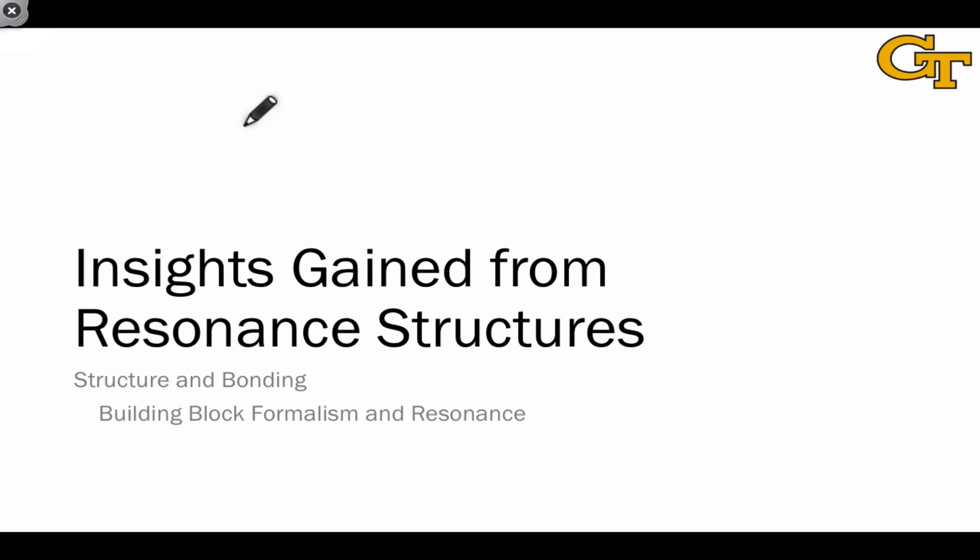We've already hinted at the ways in which we can gain some structural insights from resonance structures. For example, if we find an atom in one resonance structure with a positive charge and that same atom in a different resonance structure has a neutral charge, what we can say about the true structure of the corresponding molecule is that there's a partial positive charge on the x-atom.